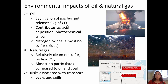Oil and natural gas have serious environmental impacts. For oil, each gallon of gas burned releases 9 kilograms of carbon dioxide into the atmosphere. It contributes to acid deposition and photochemical smog. Nitrogen oxides are also formed, but almost no sulfur oxides — those come primarily from coal burning. For natural gas, it burns relatively cleanly with no sulfur and far less CO2. Almost no particulate matter is released compared to oil and coal.